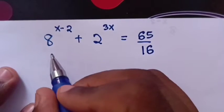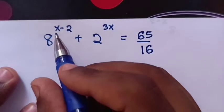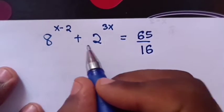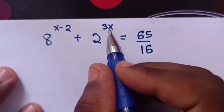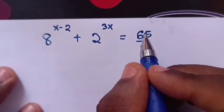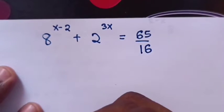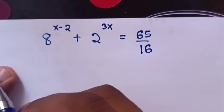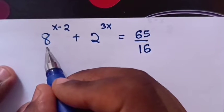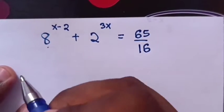Hello. To solve 8^(x-2) + 2^(3x) = 65/16, find the value of x.